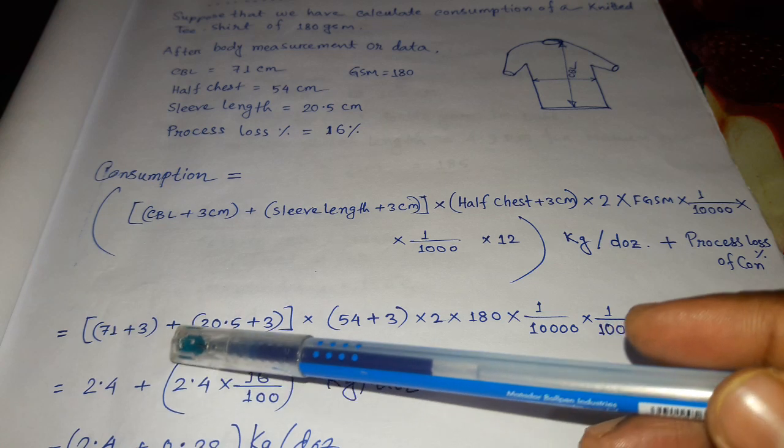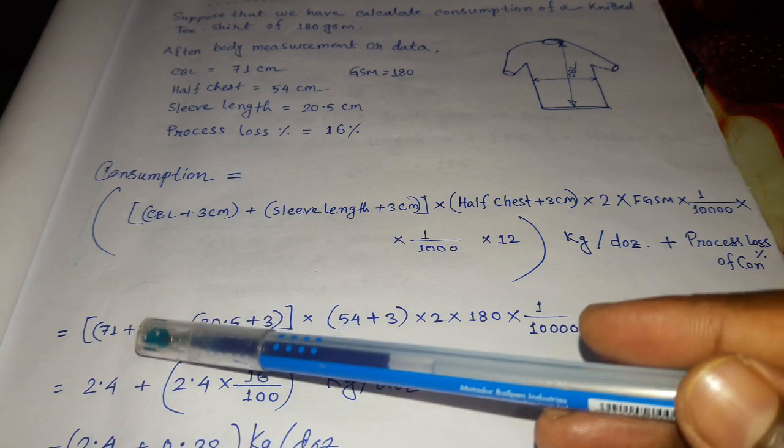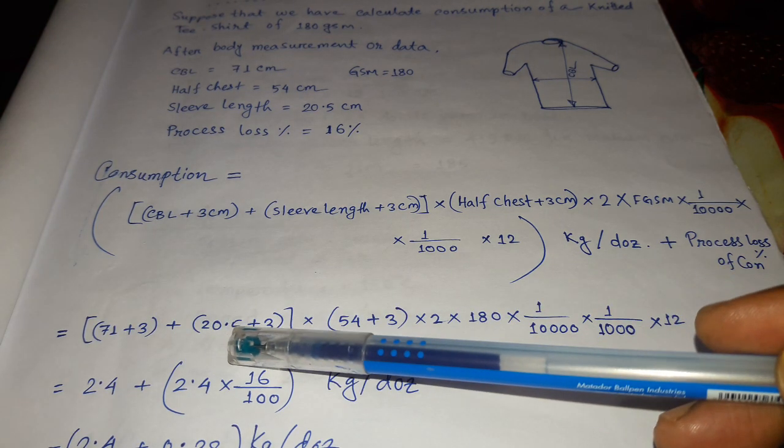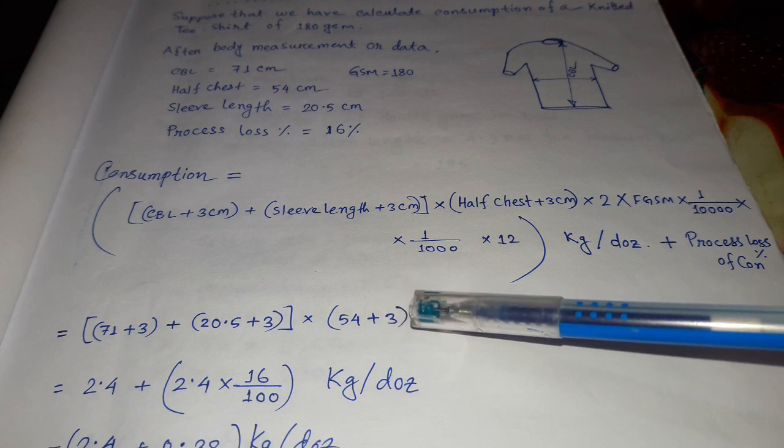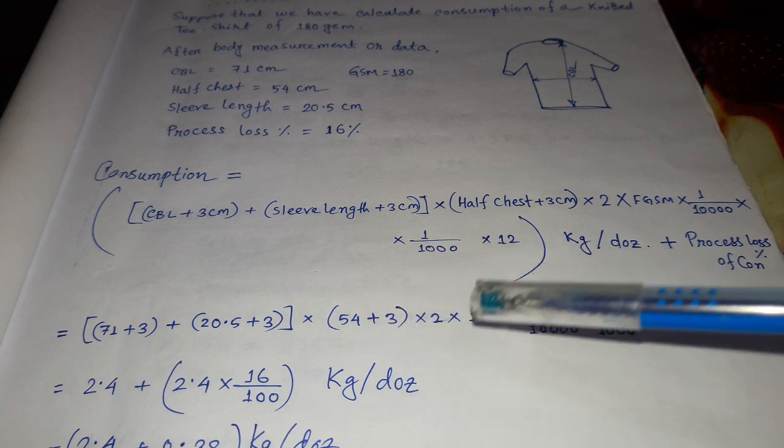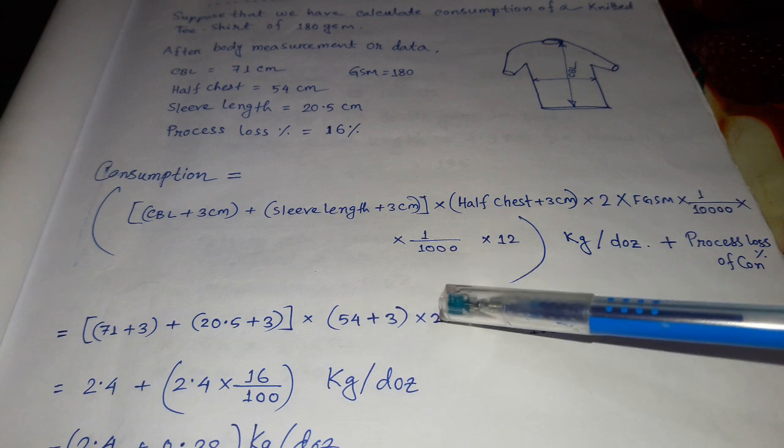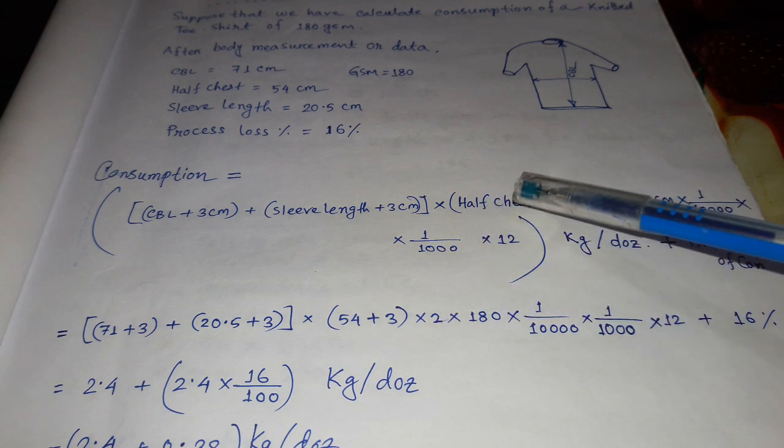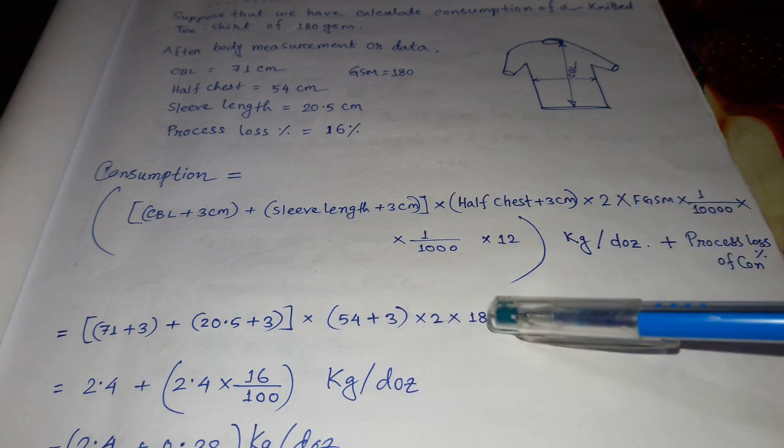71 plus 3, 20.5 plus 3, 54 plus 3. 71 plus 3 into 2 because back and front, and half chest also double, sleeve also double, so times 2.